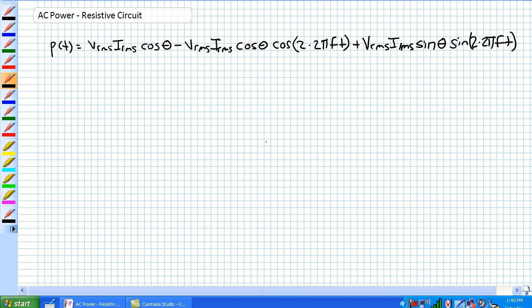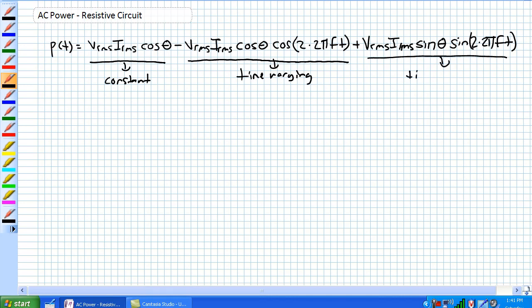Last video, we came up with this formula where P(t) equals VRMS IRMS cosine theta, which is basically a constant, minus VRMS IRMS cosine theta cosine 2 times 2πFt, which is our first time varying, plus VRMS IRMS sine theta sine 2 times 2πF(t), which is our second time varying.